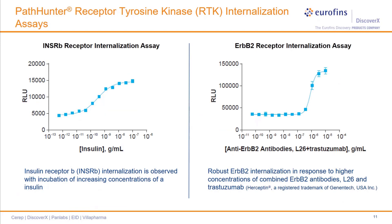Presented here are data from two internalization assays for single-pass receptor tyrosine kinases. In the panel on the left, increasing concentrations of insulin result in greater amounts of insulin receptor B internalization. On the right, ERB-2 exhibits greater amounts of receptor internalization to the endosome when incubated with greater concentrations of a combination of two ERB-2 antibodies, one of which is Trastuzumab, sold as Herceptin by Genentech. Robust internalization is also observed when Herceptin is used in combination with another therapeutic ERB-2 antibody, Pertuzumab, also sold by Genentech.